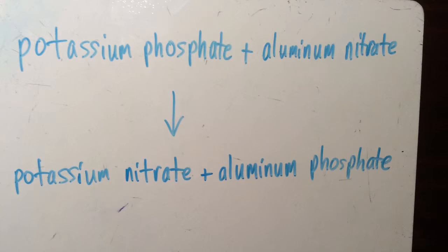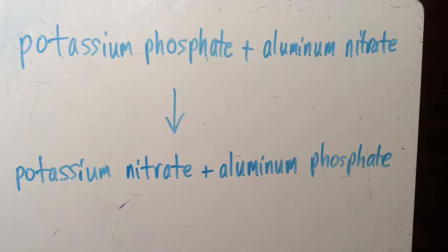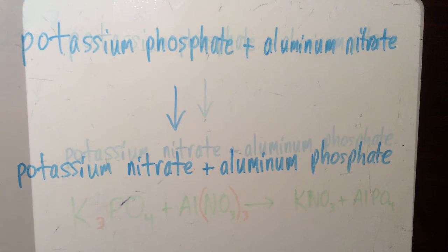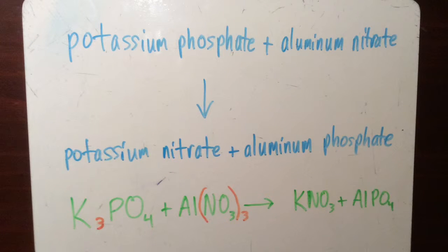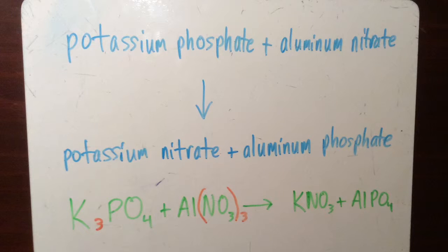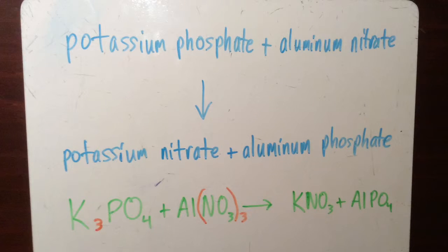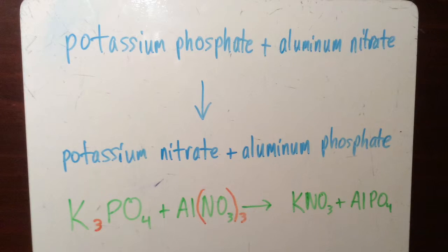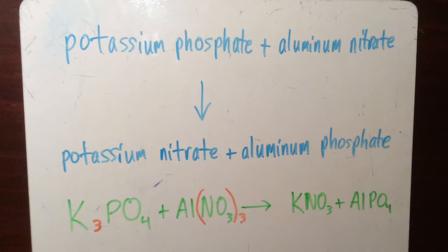The first step in this process is writing out the formula using the chemical equation for each molecule. This is what the chemical equation looks like. Potassium is represented by K, phosphate is PO4, aluminum is Al, and nitrate is NO3.